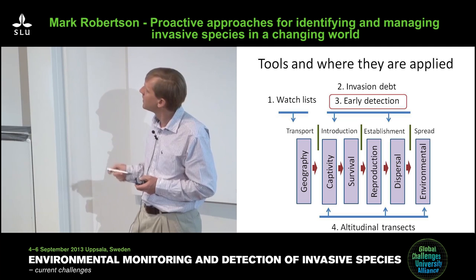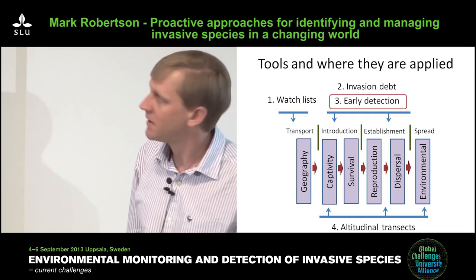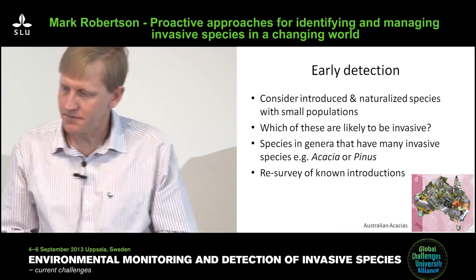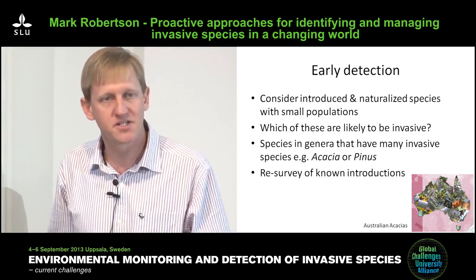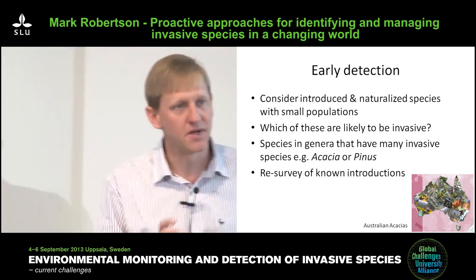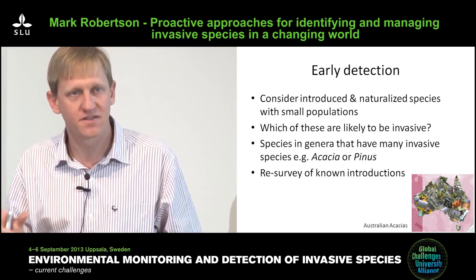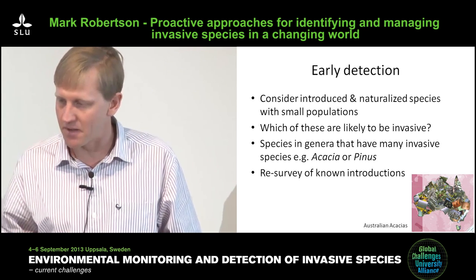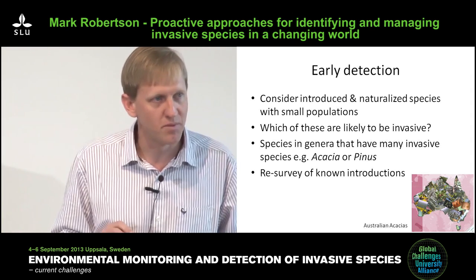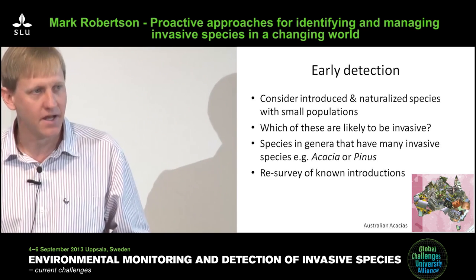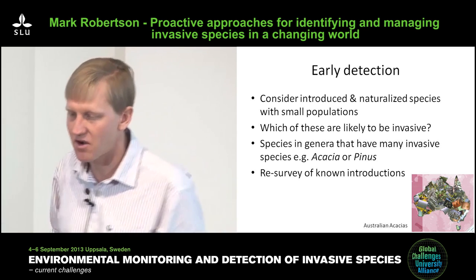Moving on to the third component — early detection. We consider introduced and naturalised species with small populations, because there's a lot you can do when it's still a small population and the problem hasn't become large yet. We want to identify which species with small populations are likely to be invasive, because the earlier you act, the more likely you are to either eradicate or have a major impact with minimal investment of resources.